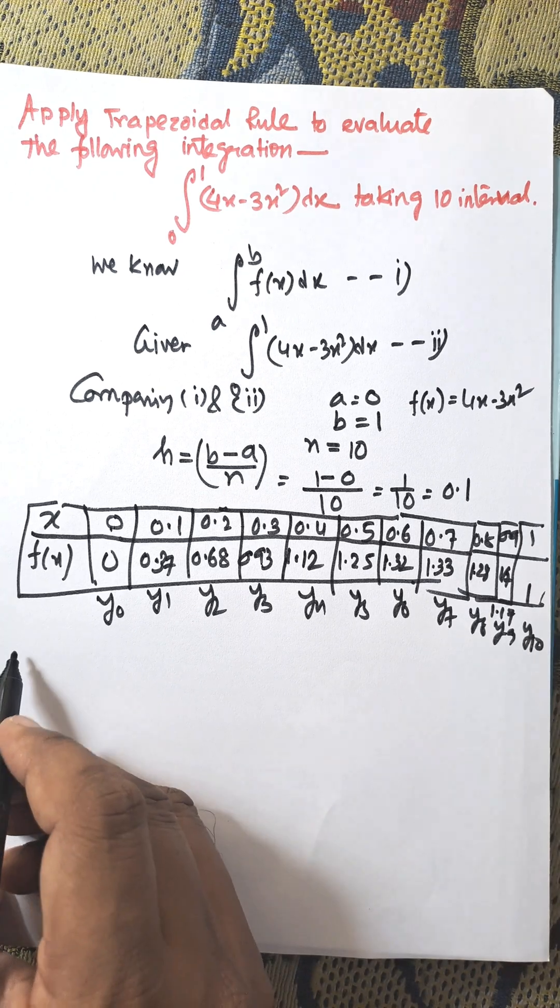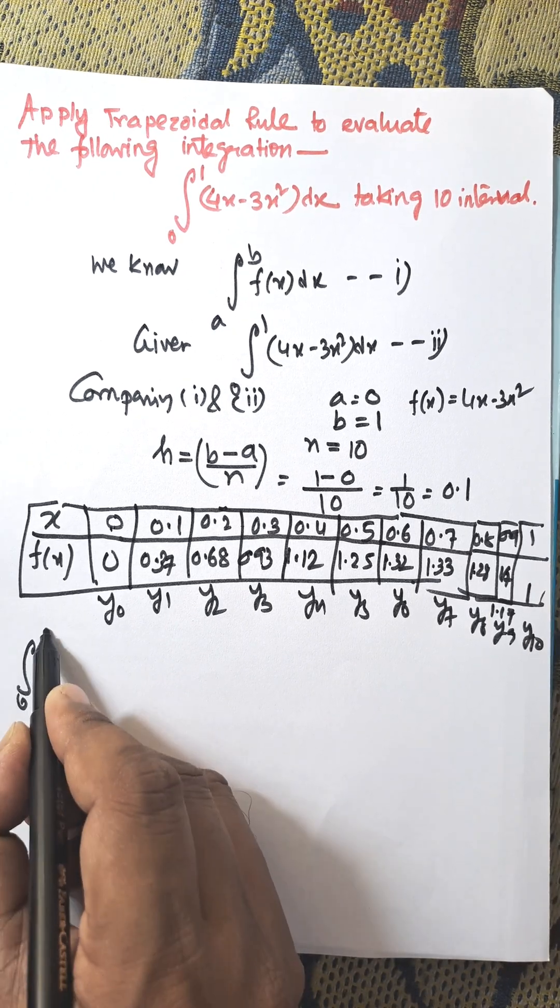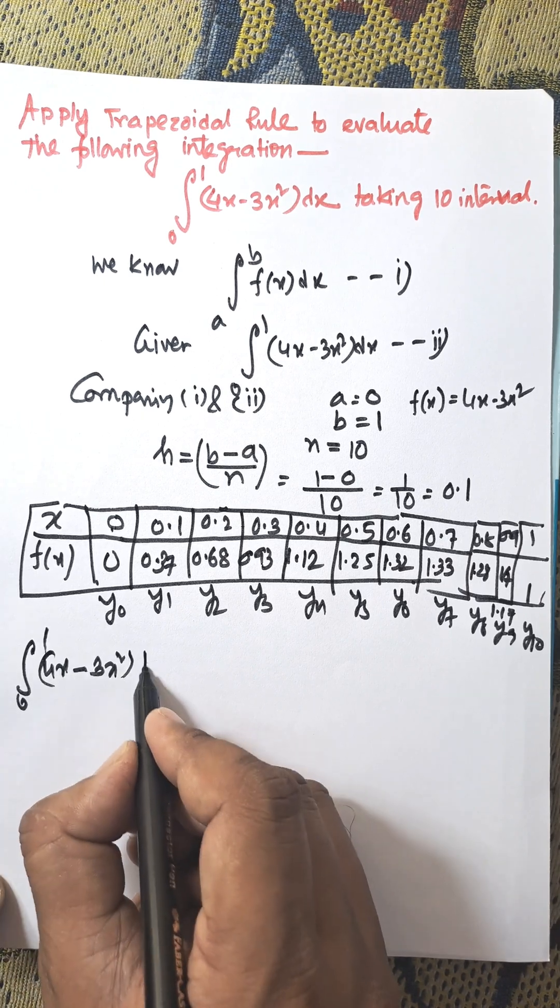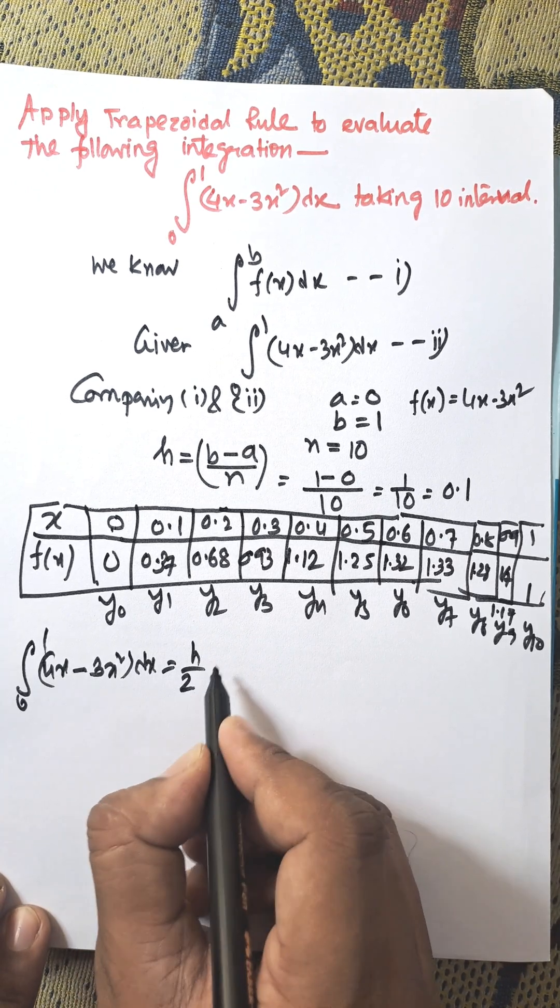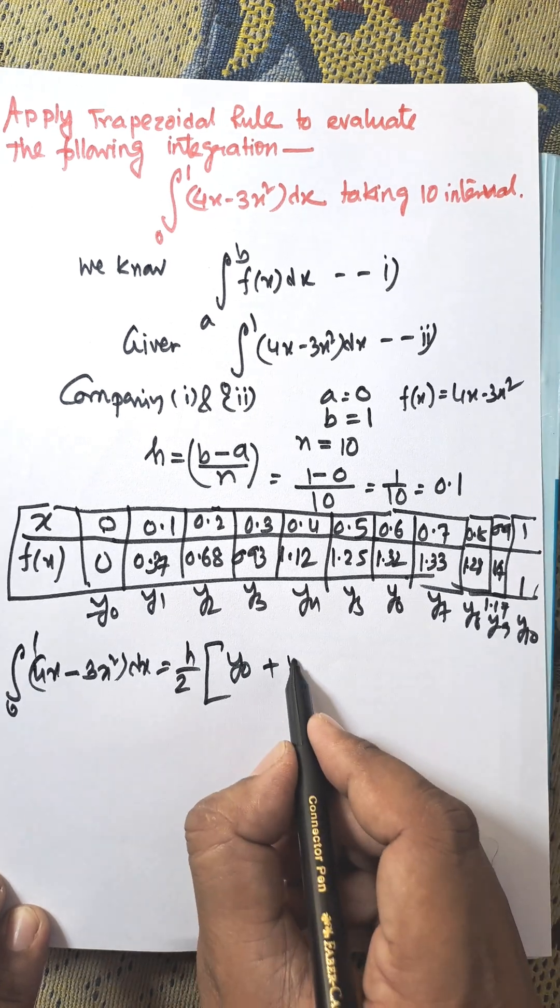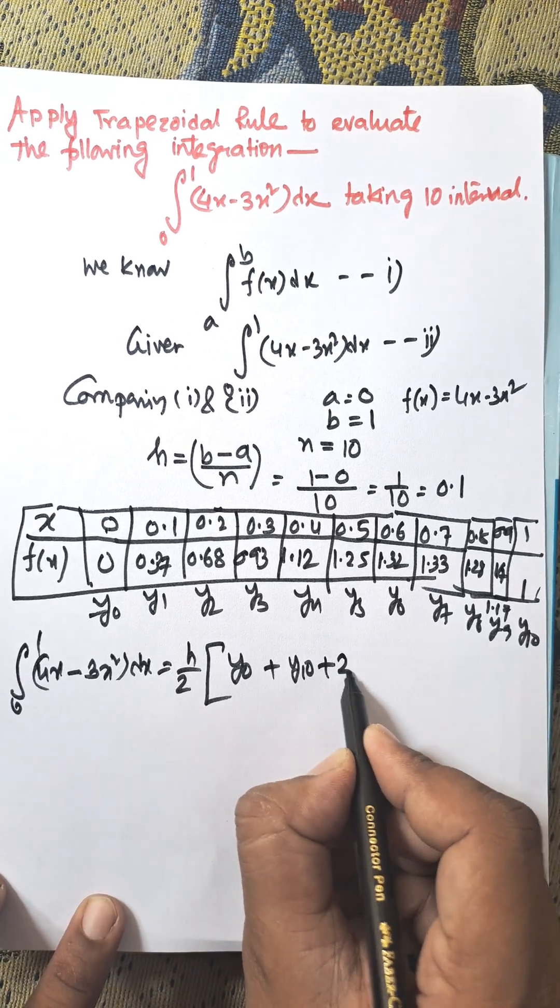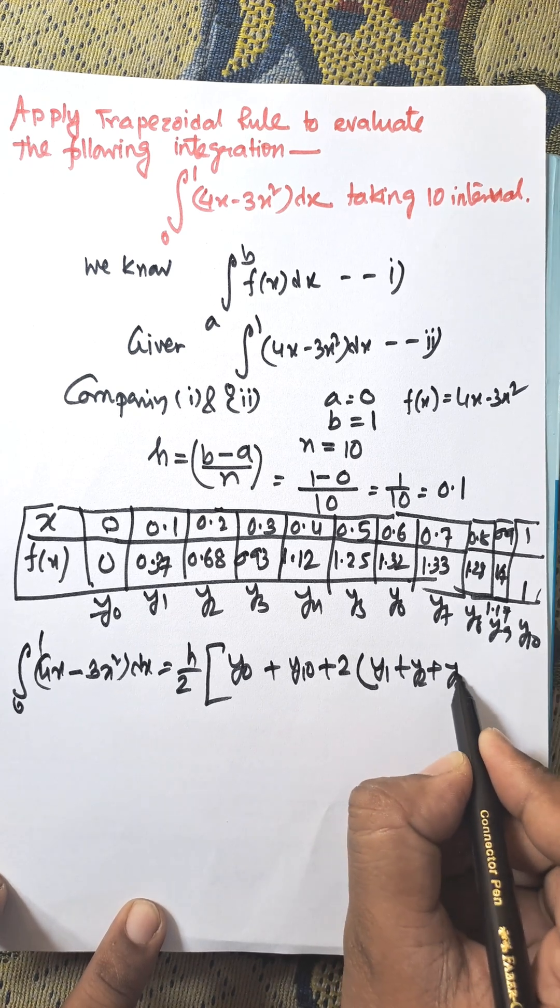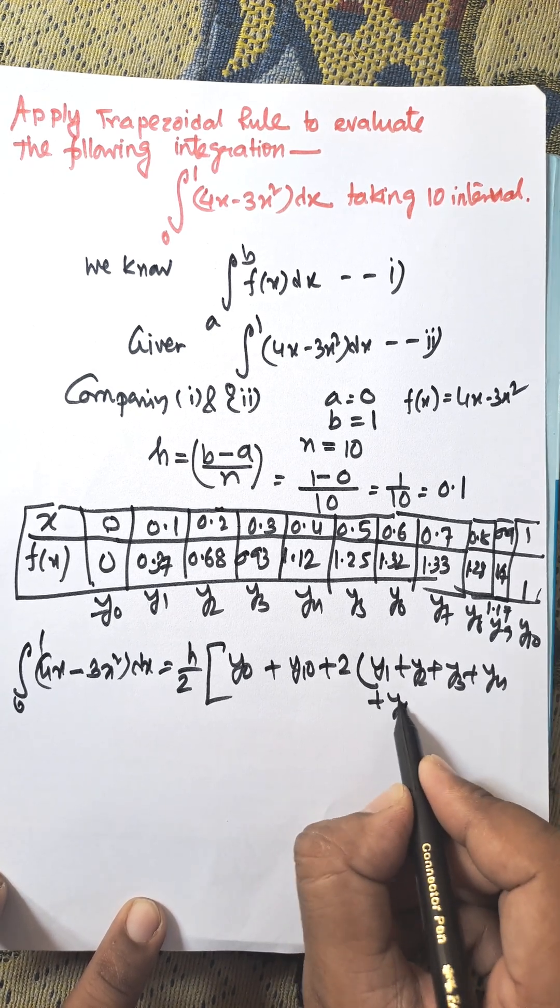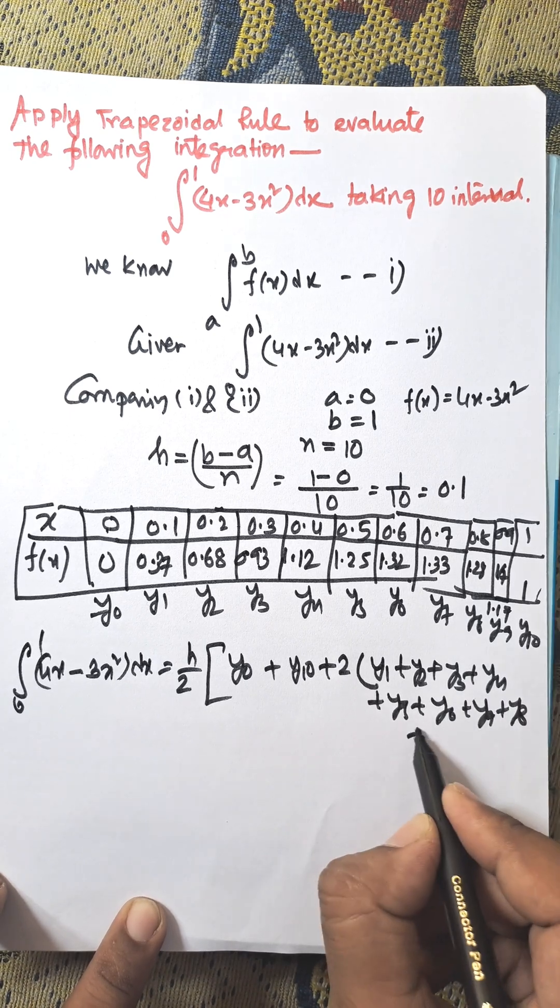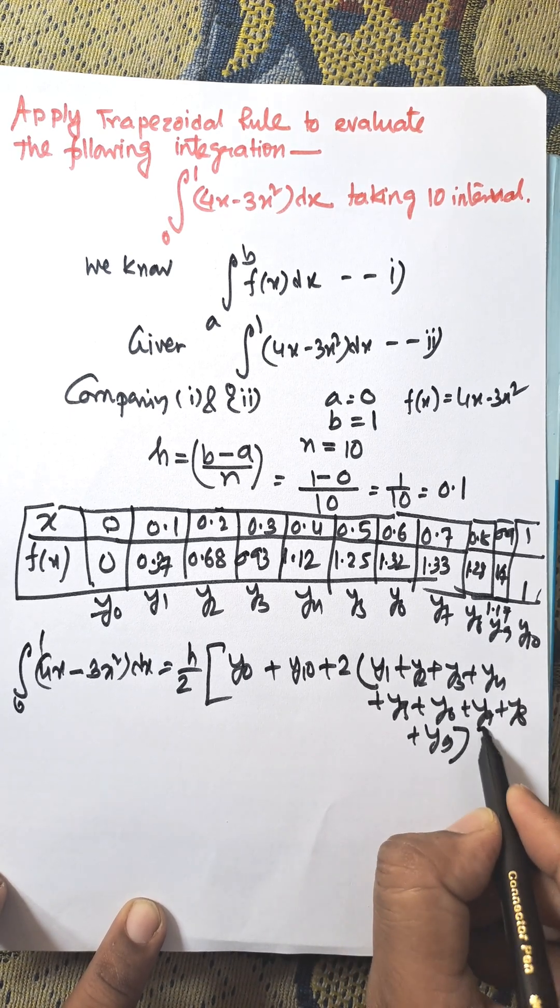Now, from the trapezoidal rule, the integral from 0 to 1 of (4x - 3x²)dx equals h/2 times [first term (y₀) plus last term (y₁₀) plus 2 times the sum of remaining terms (y₁ + y₂ + y₃ + y₄ + y₅ + y₆ + y₇ + y₈ + y₉)].